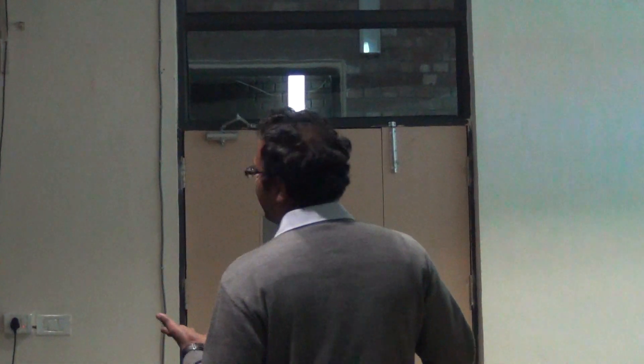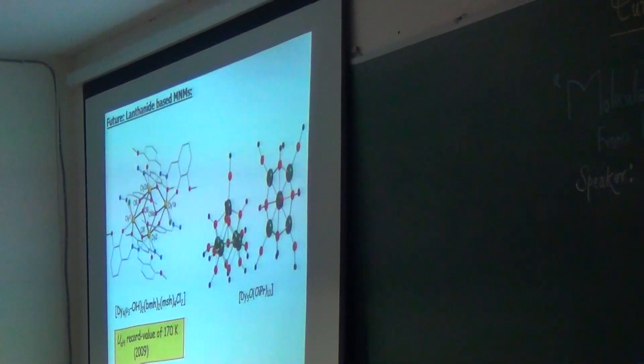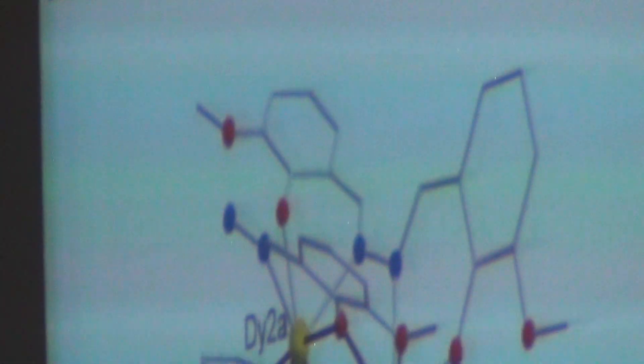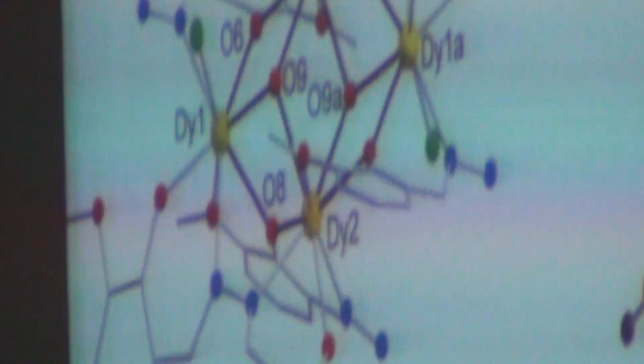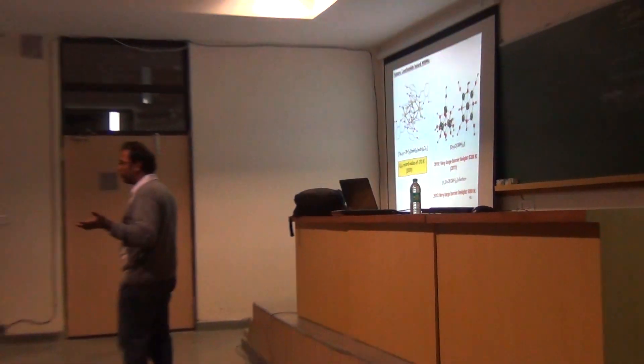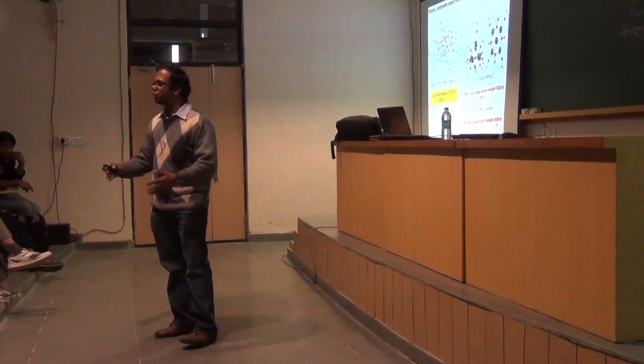People thought maybe lanthanides would help, because lanthanides have a large anisotropy — a huge spin-orbit coupling. You can see that in 2009 the dysprosium-4 molecule gave 870 K. In 2011, dysprosium-5 gave 530 K. In 2013, 890 K. So we don't think the problem is solved.